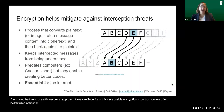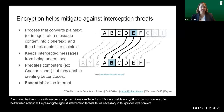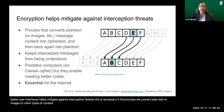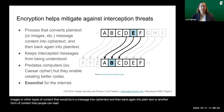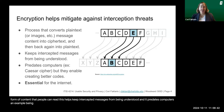Encryption helps mitigate against interception threats. In this process, we convert plain text or images or other types of content that would be in a message into cipher text, and then back again into plain text or another form of content that people can read. This helps keep intercepted messages from being understood, and it predates computers — an example being the Caesar cipher — but it also enables creating better codes.